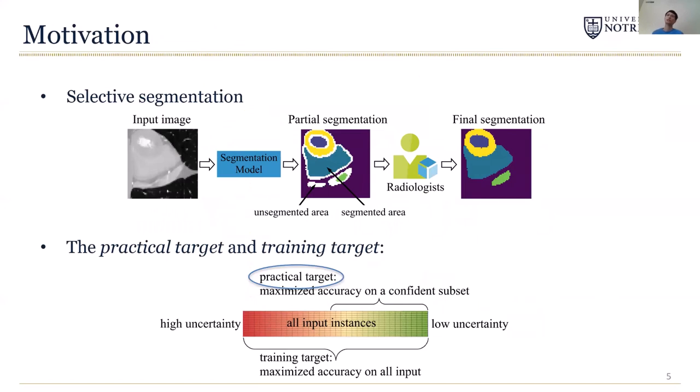Selective segmentation works in a similar way. The segmentation model will do the segmentation, but it will also indicate the area where the model is uncertain. Then the radiologist will check these areas and finish the segmentation.